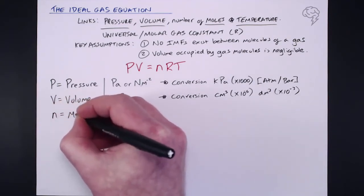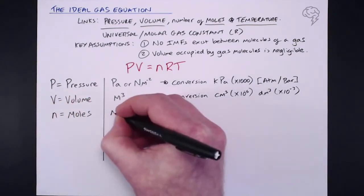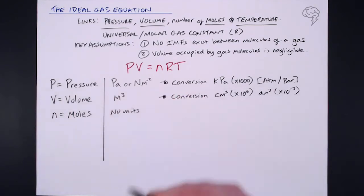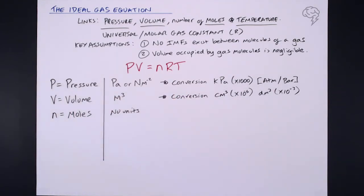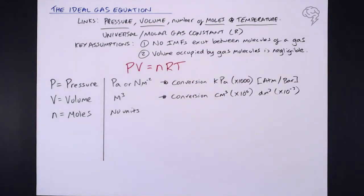On to the other side of the equation here now. The n, of course, stands for the number of moles. There are no units here. So if you're calculating number of moles, it's just number of moles. But of course, if you're given it and you need to use it in the equation, there are no units there.